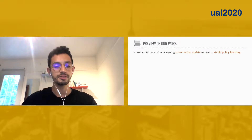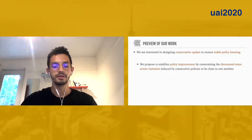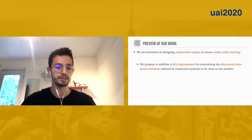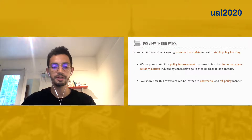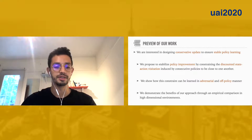In this work, we are interested in designing conservative updates to ensure stable policy learning. First, we propose to stabilize policy improvement by constraining the discounted state-action visitation induced by consecutive policies to be close to each other. Secondly, we show how this constraint can be learned in an adversarial and off-policy manner. And finally, we demonstrate the benefits of our approach through an empirical investigation.